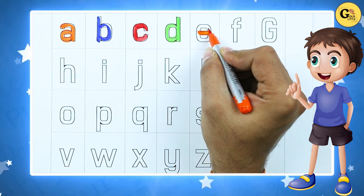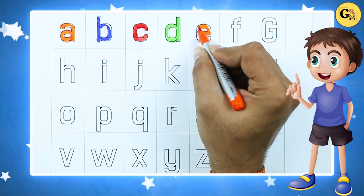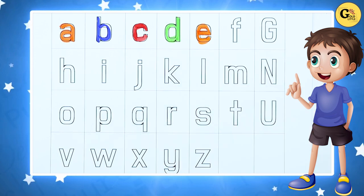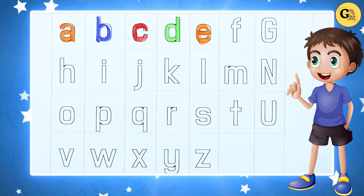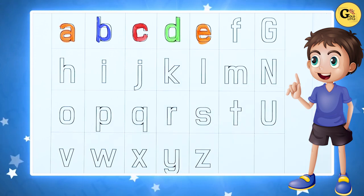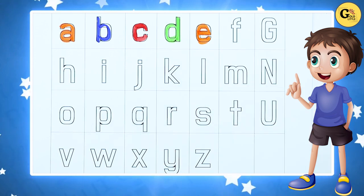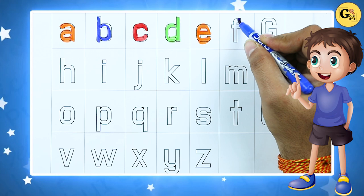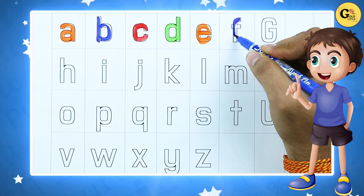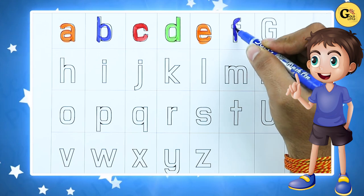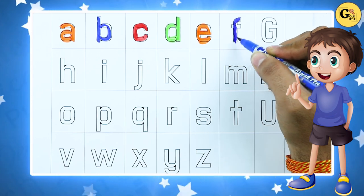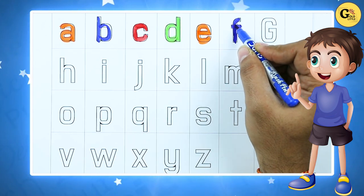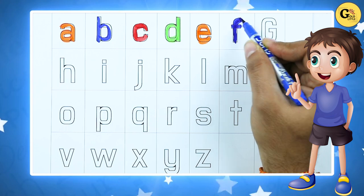Tell me — E for elephant. Right, E for elephant. F — F for fish. It's a F, F for fish.